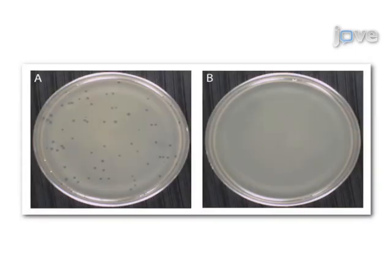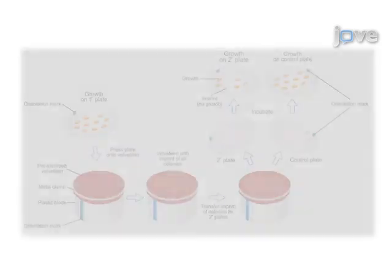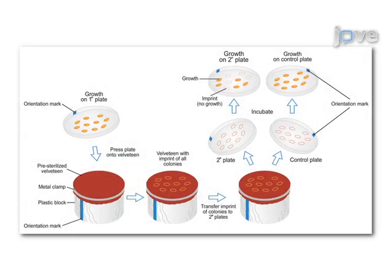Soft agar overlays are used to isolate phage and enumerate plaques, while replica plating transfers cells from one plate to another in an identical spatial pattern.